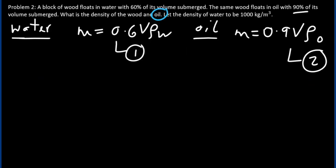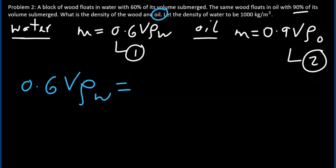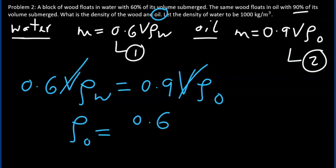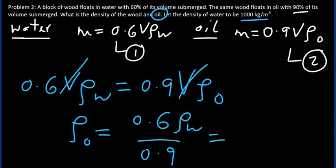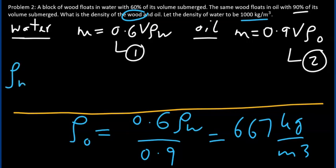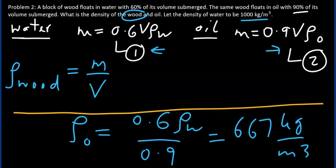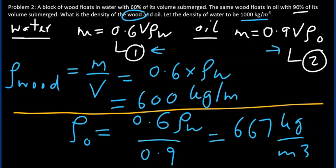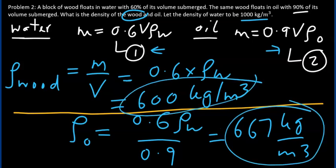Equating Equations 1 and 2: 0.6 × V_wood × ρ_water = 0.9 × V_wood × ρ_oil. Volume cancels, giving ρ_oil = (0.6 / 0.9) × 1,000 = 667 kg/m³. For the density of wood, using Equation 1: ρ_wood = m/V = 0.6 × ρ_water = 600 kg/m³. That solves the problem. Thank you for watching.